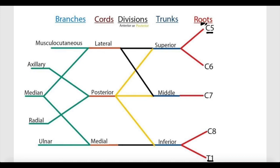These roots will combine, merge, or continue forward to form the next part of the brachial plexus, which are called the trunks. We have three trunks: the superior trunk, the middle trunk, and the inferior trunk. These trunks are named based on their location. The first two roots, C5 and C6, combine to form the superior trunk. C7 continues forward without combining with anything to form the middle trunk, and finally C8 and T1 combine together to form the inferior trunk.